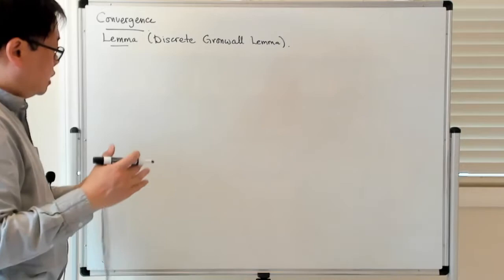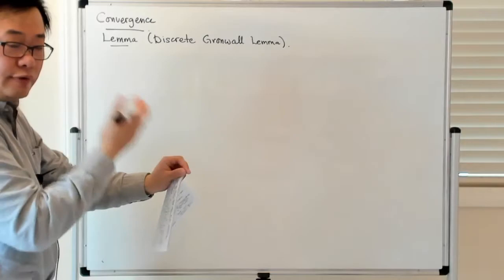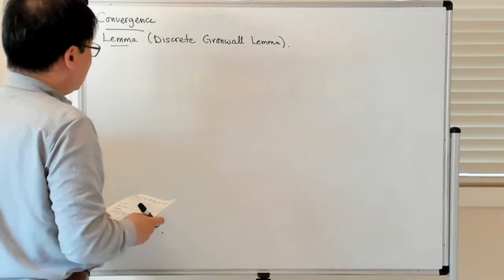One source is the error which comes from the initial data accumulated from the previous steps of the method, and the other one is the local error.